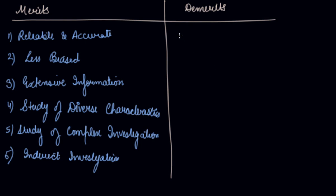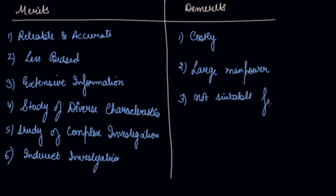Now, what are the demerits? It is very costly because you have to collect data from each and every person. Large manpower is required to collect this data. So, this is very time-consuming and if the universe comprises a large number of items, then it may not be possible to cover each and every item. Census method becomes practically inoperative in such situations. So, not suitable for very large investigations.